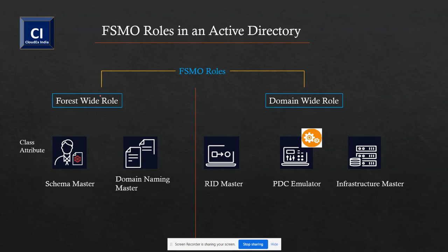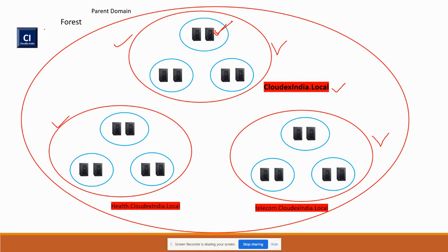The second one is domain naming master. It basically keeps records of all existing domains. Going back to the slide — there are three domains, one parent and two child domains. Any domain controller can have this role inside the parent domain, but you cannot distribute this role across two domain controllers at a time. Any single DC can have this role within the complete forest domain. It helps to maintain the record of all domains inside the forest.